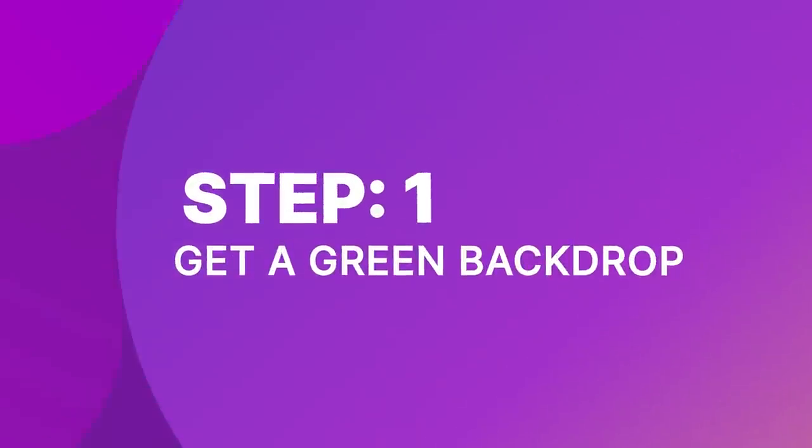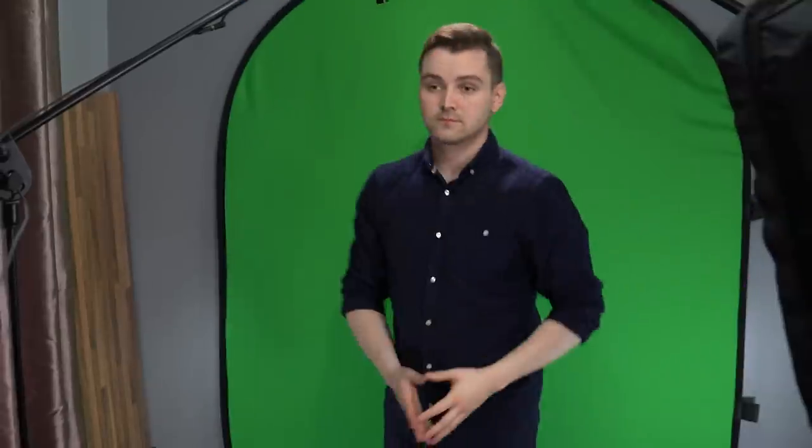Step 1: Get a green backdrop. Get a piece of muslin cloth that's a bright shade of green. Avoid using a color that matches your skin tone so you don't blend into your background. This is why we use green — because it's opposite from orange, which is the closest color to our skin tones. Blue screen backdrops are also available, but they can cause problems if the person on camera has blue eyes or is wearing blue clothes. If you don't want to mess around with hanging a cloth, a collapsible green screen panel is a nice option, and this is what we use here.